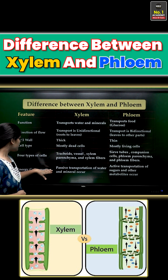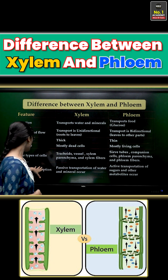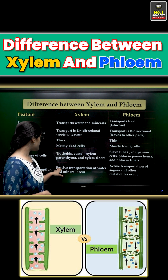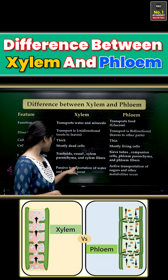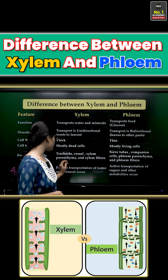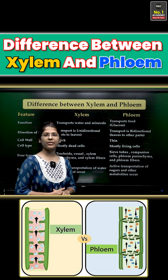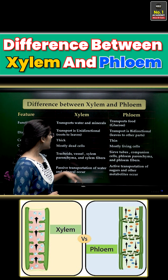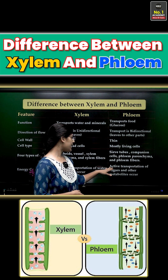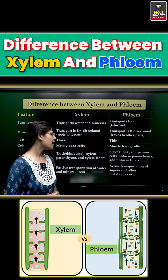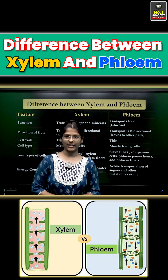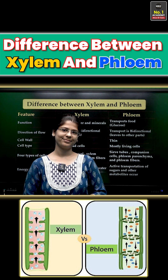The last point is energy consumption. There is passive transportation of water and minerals in xylem, but in phloem, active transportation of sugar and metabolites occurs. Thank you.